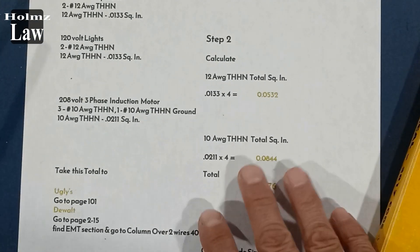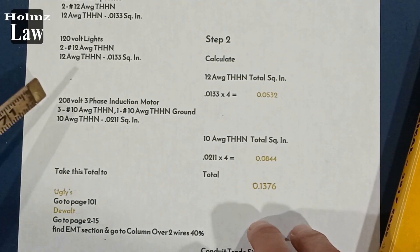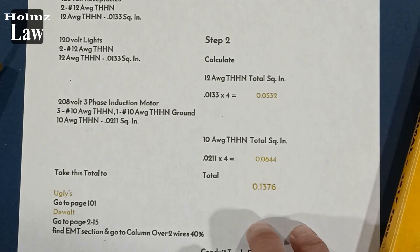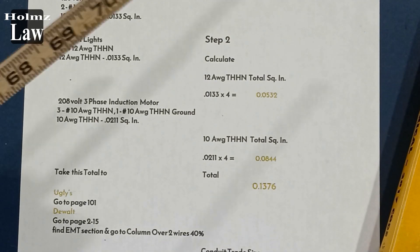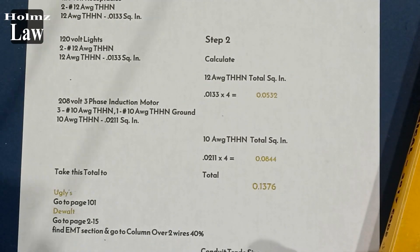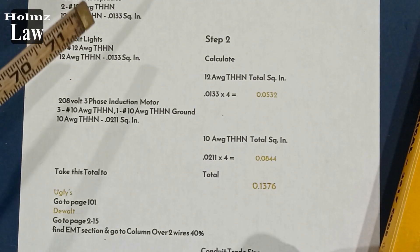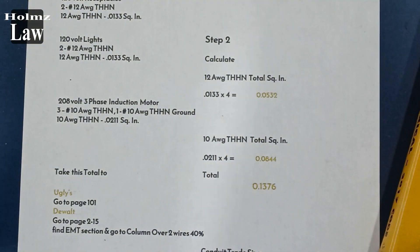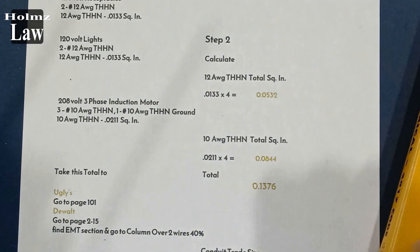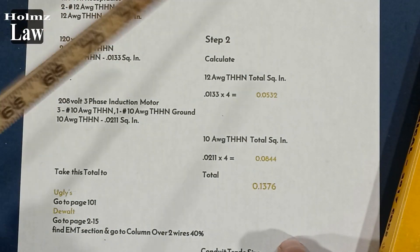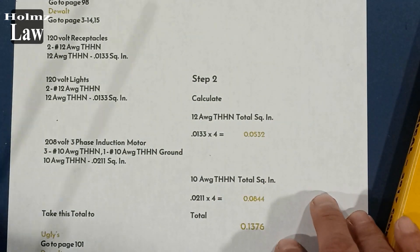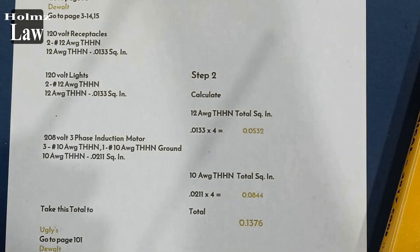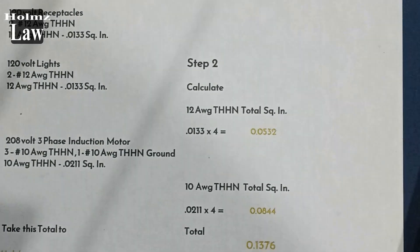For the motor circuit, it's a three-phase 208-volt circuit. We're running three 10-gauge THHN wires, and we're also running a number 10 ground with that. So for this example, the motor circuit includes a ground — you can adjust your own calculation in the field.